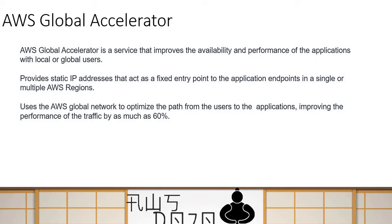In the case of multiple applications running across multiple regions, Global Accelerator can provide a fixed entry point to your users. No matter where the users are in the world, they don't have to worry about individual endpoints — they get a fixed entry point, and based on that fixed entry point or static IP, users are directed to one of the configured endpoints suitable for their regional access.